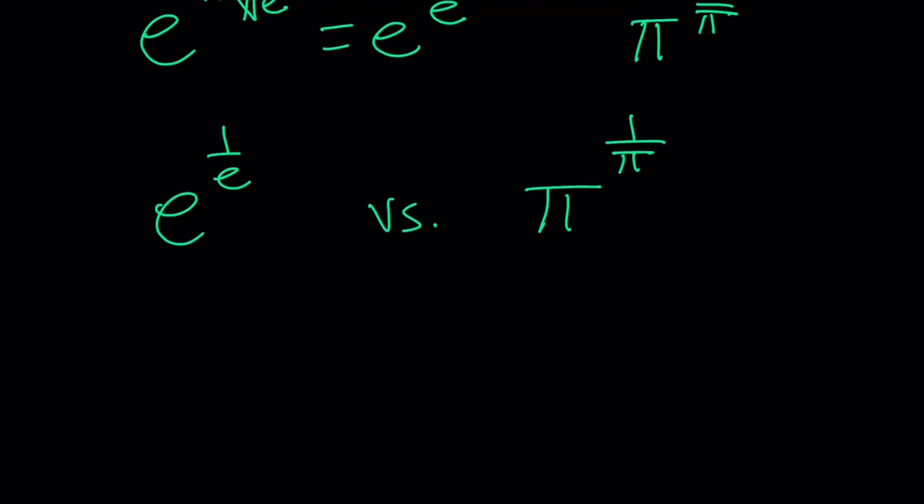So our problem is equivalent to comparing e to the power 1 over e versus π to the power 1 over π. Make sense? Now, this is a lot easier because we can use a function to model the behavior.